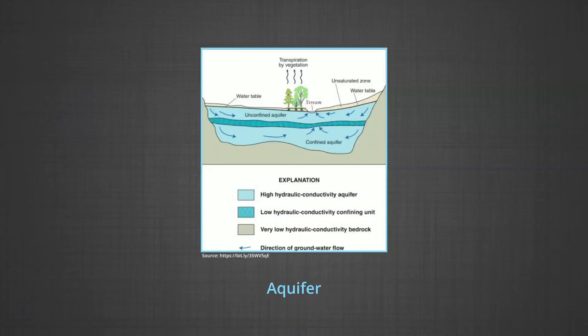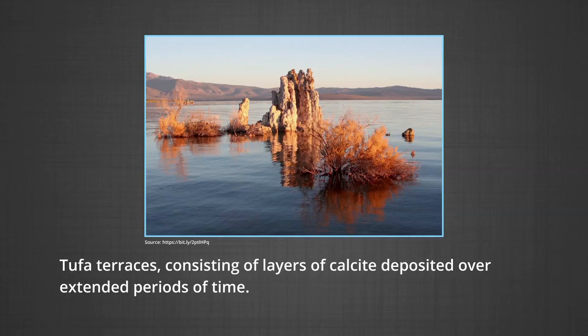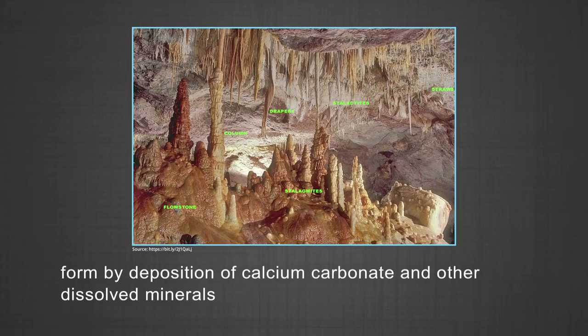The karstification of a landscape may result in a variety of large or small scale features both on the surface and beneath. Beneath the surface, complex underground drainage systems such as karst aquifers and extensive caves and caverns systems may form. Calcium carbonate dissolved into water may precipitate out where the water discharges some of its dissolved carbon dioxide. Rivers which emerge from springs may produce tufa terraces consisting of layers of calcite deposited over extended periods of time. In caves, a variety of features collectively called calcite deposits or speleothems are formed by deposition of calcium carbonate and other dissolved minerals.